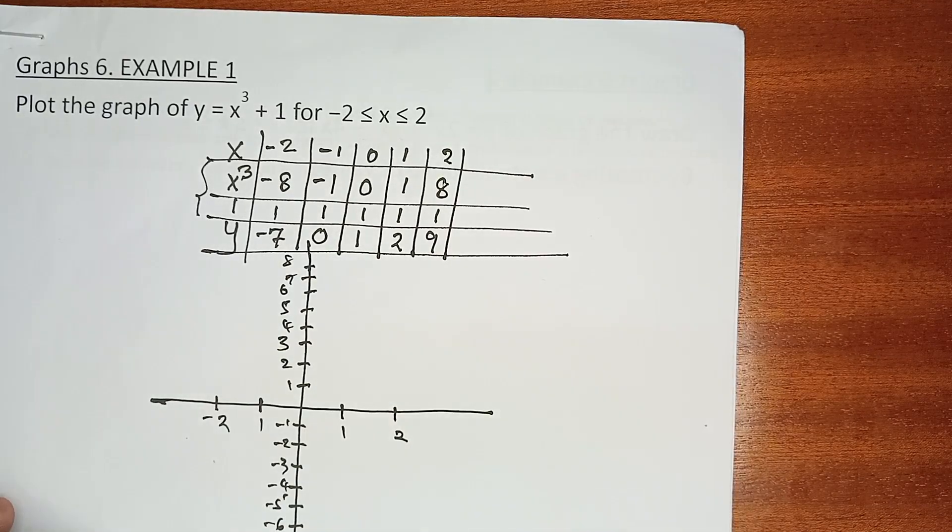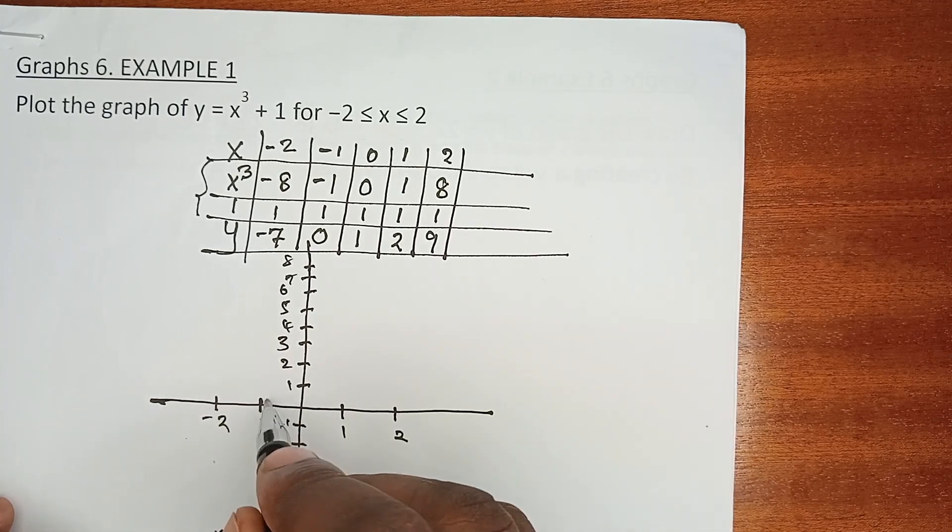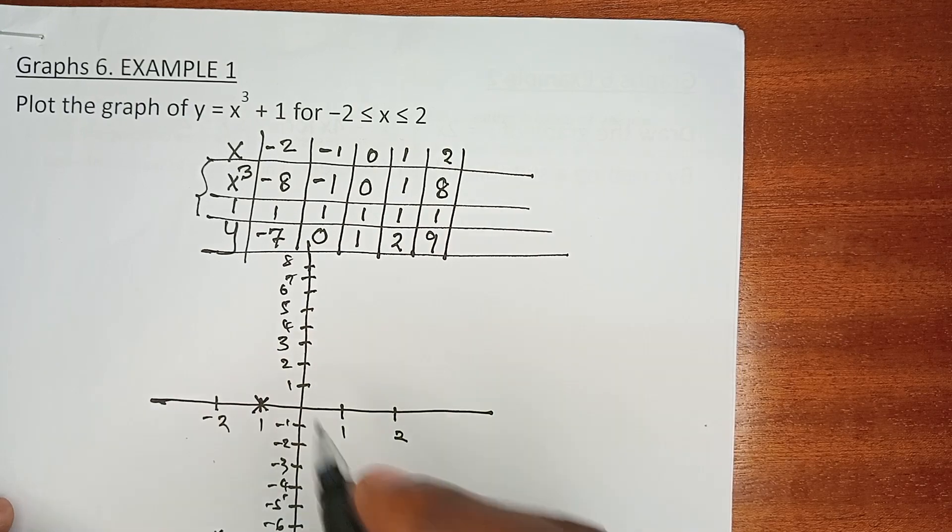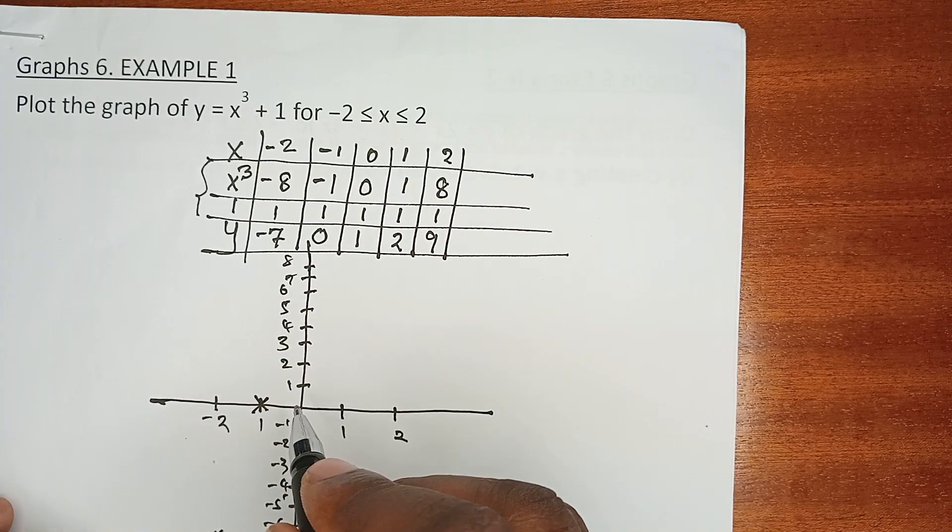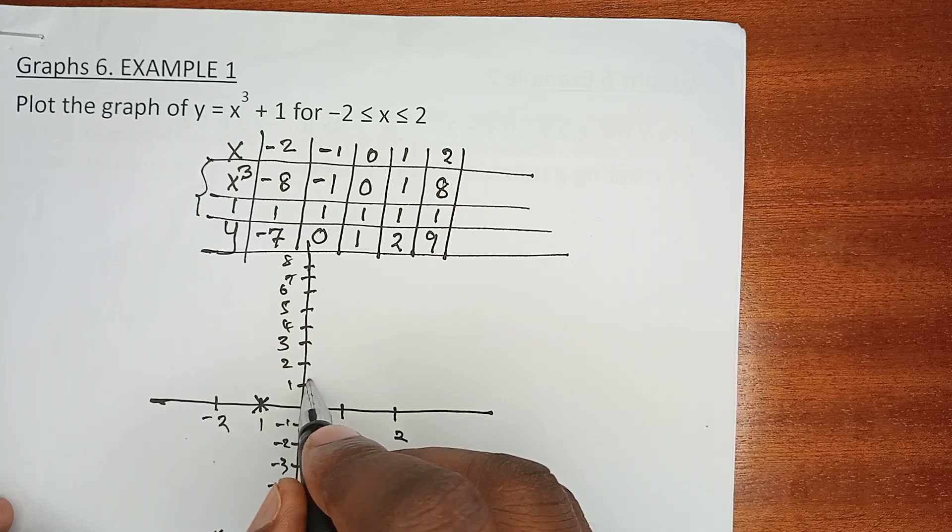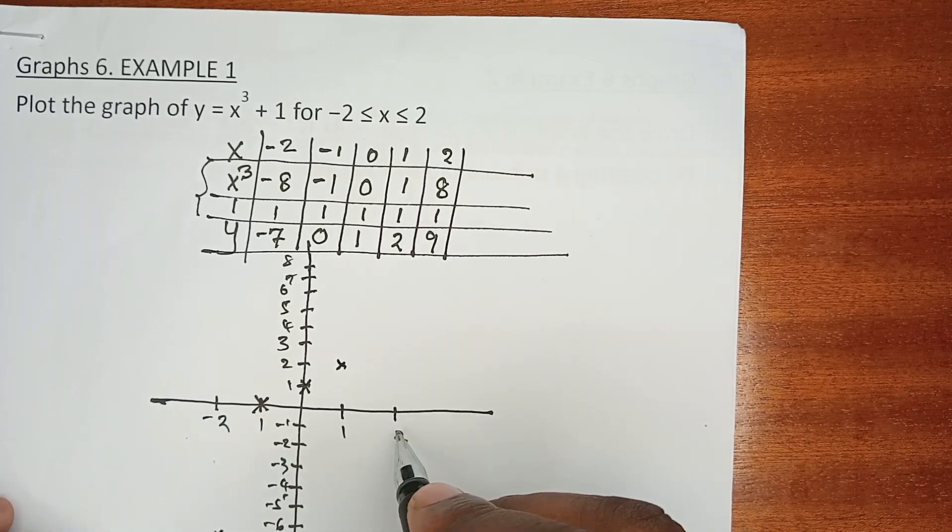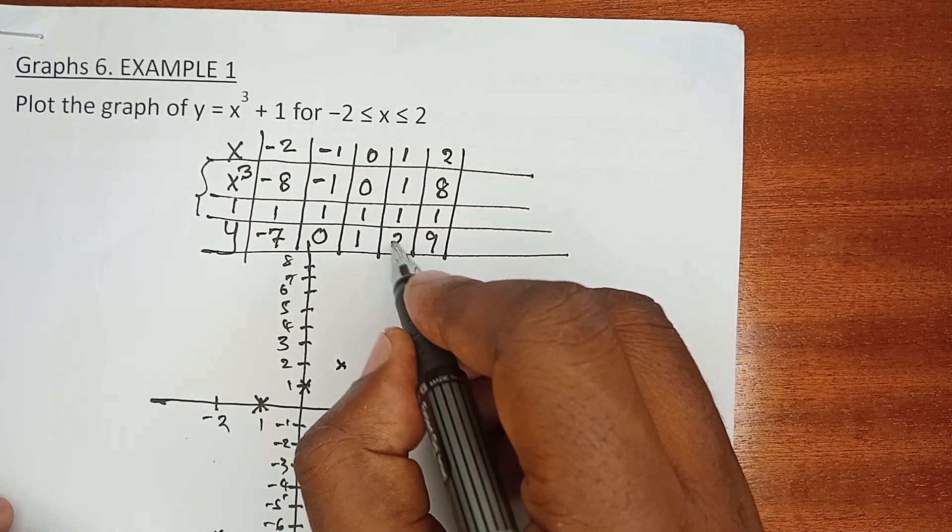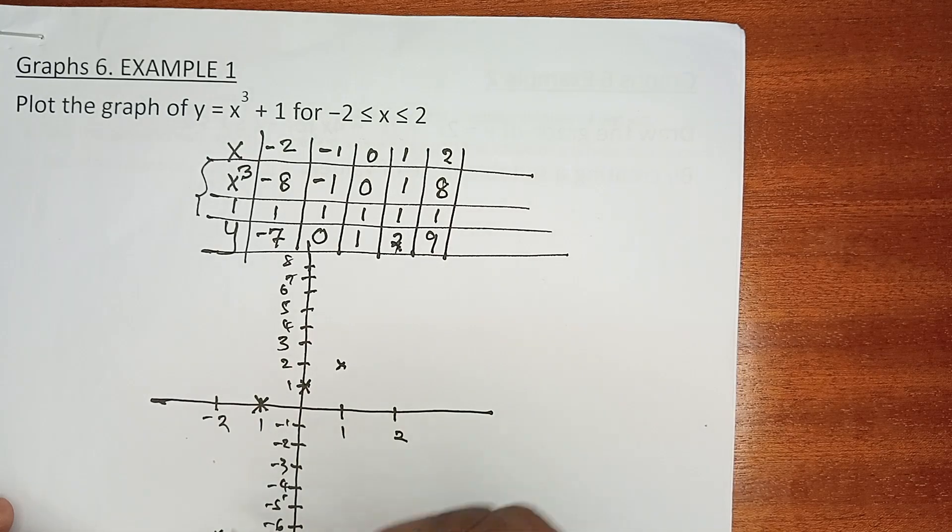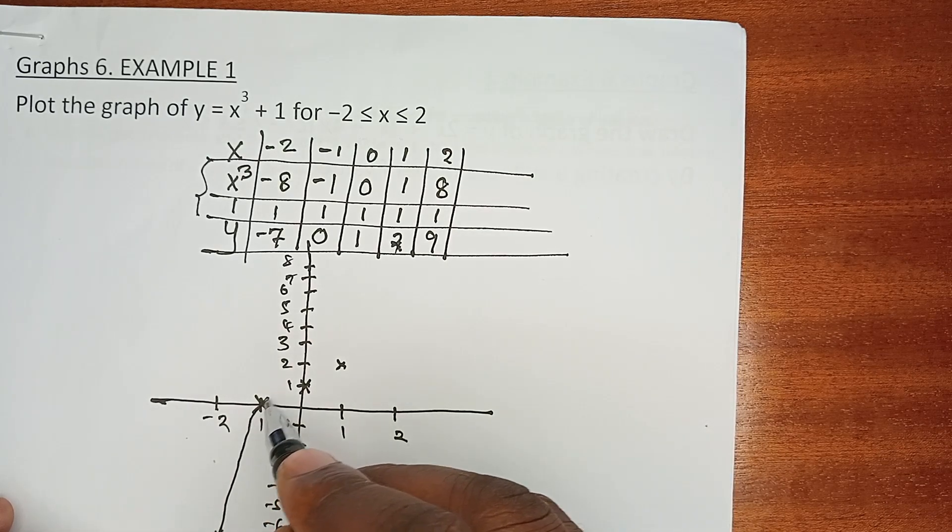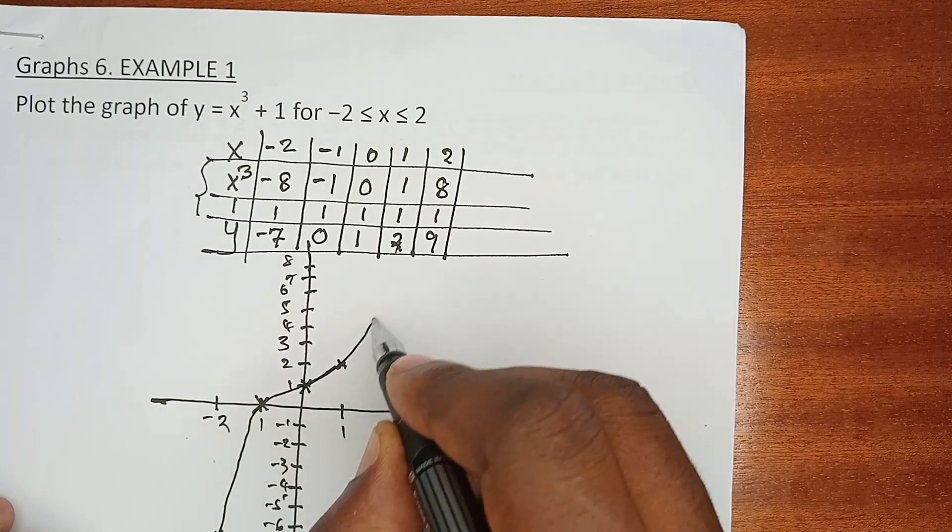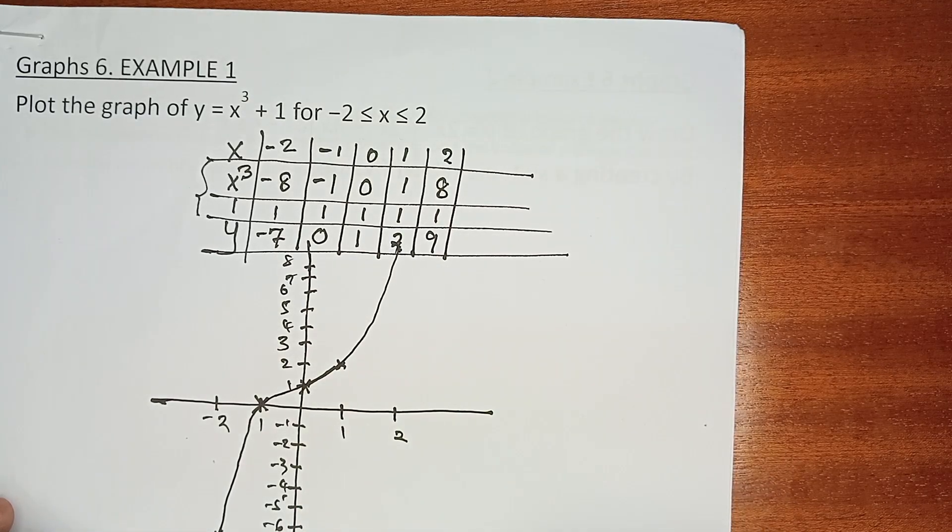So you will have when x is negative 2, y is negative 7. When x is negative 1, y is 0. When x is 0, y is 1 somewhere there. When x is 1, then y is 2. And when x is 2, y happens to be up there, 9. And you have a graph that looks like it should be done using freehand. You should not use a ruler, and that is the graph we have been able to plot.